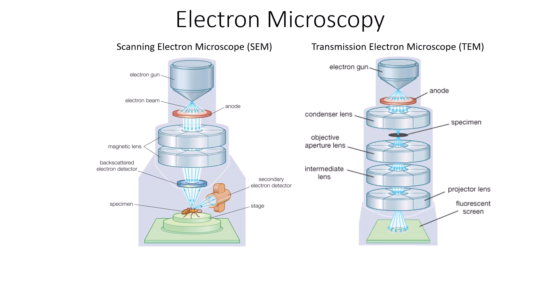The scanning electron microscope provides images at really good resolution. The transmission electron microscope focuses the beam of electrons through the specimen, giving you more of the internal components — not in 3D but in 2D — letting you look inside kind of like an x-ray. Both techniques use a beam of electrons.